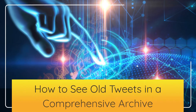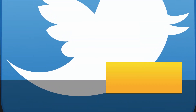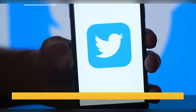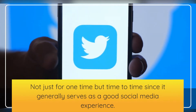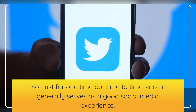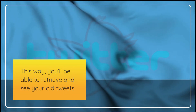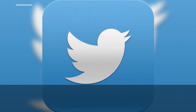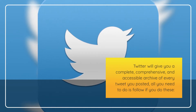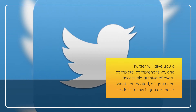Method 3: How to see old tweets in a comprehensive archive. In Twitter, you can request a collection of your tweets — not just once, but from time to time, since it generally serves as a good social media experience. This way, you'll be able to retrieve and see your old tweets. Twitter will give you a complete, comprehensive, and accessible archive of every tweet you posted.